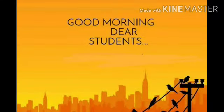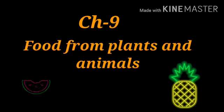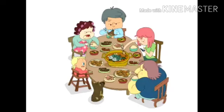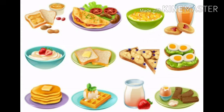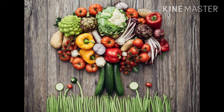Good morning dear children. Today we are going to start the new chapter, that is chapter 9: Food from Plants and Animals. Like all other living beings, humans also need food to survive on planet Earth. Humans eat different varieties of food. The food that we eat can be obtained either from plants or from animals.